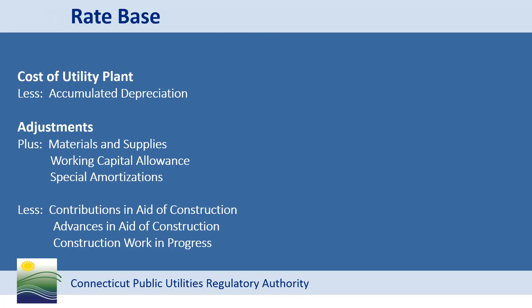Other adjustments to the cost of utility plant to determine a company's rate base are additions of materials and supplies, working capital allowance, and special amortizations. Then there are reductions for contributions in aid of construction, advances in aid of construction, and construction work in progress, as these items represent money which has been contributed by rate payers or developers, so the company cannot earn a return on other people's money.